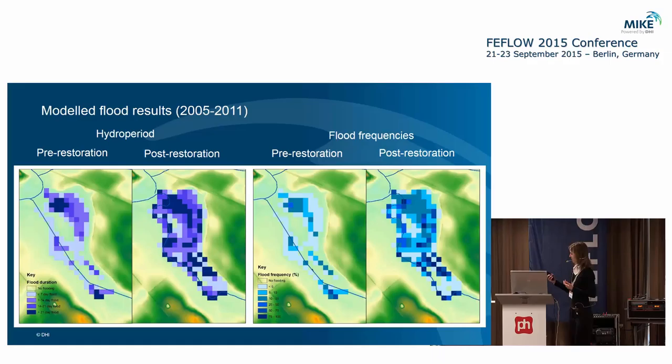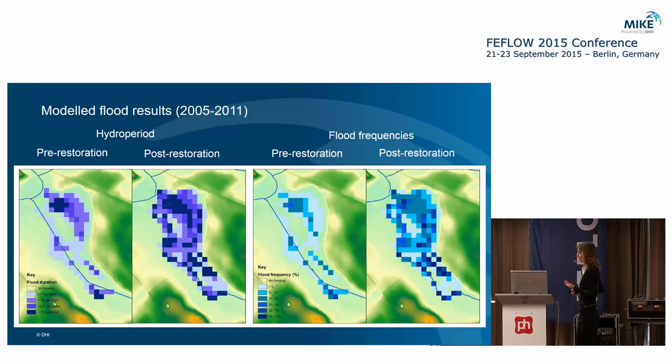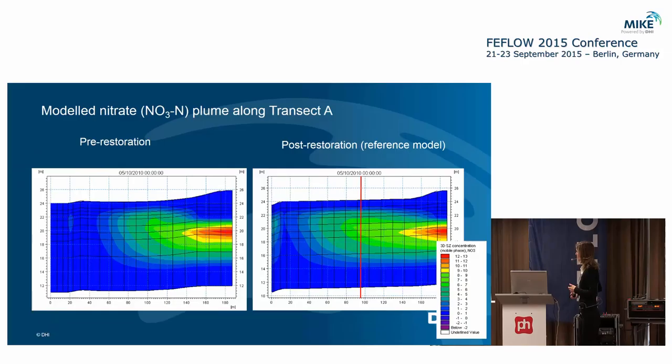This shows the hydro period and flood frequency pre- and post-restoration. A large part of the wetland was flooded for more than two weeks at a time on average post-restoration. There is also some water on the ground in the pre-restoration scenario, but looking at the water balance, this is not due to river overtopping — it is actually rising groundwater or seepage from the river into the wetland, and the same pattern is seen in flood frequencies.